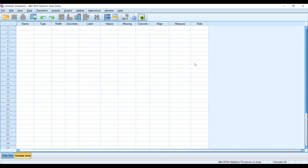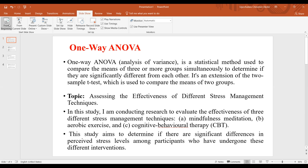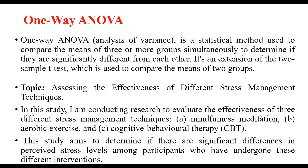Hello and welcome to my tutorial. Today I would like to talk about one-way ANOVA test. I'll be using both SPSS and PowerPoint presentations to make explanations so you can clearly understand why you have to use one-way ANOVA tests. One-way ANOVA is a statistical method that you can use to compare the means of three or more groups simultaneously to determine if they are significantly different from each other.